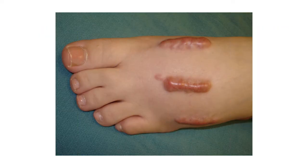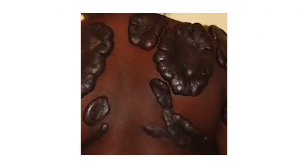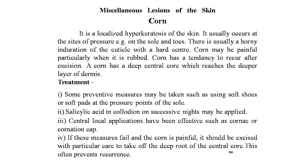The first skin lesion is the corn. It is a localized hyperkeratosis of the skin, usually occurring at the site of pressure — that is, on the sole and toes. There is usually a horny induration of the cuticle with a hard center. Corn may be painful, particularly when it is rubbed.